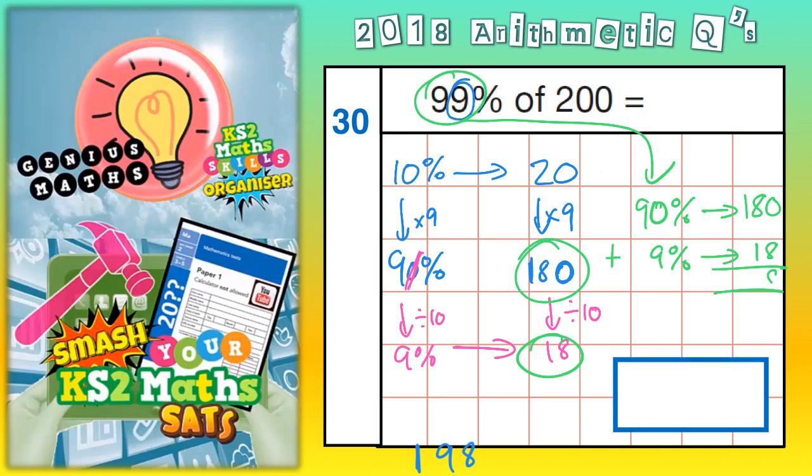0 plus 8 is 8, 8 plus 1 is 9, 1 plus nothing is 1. So again, 90% plus 9% is 99%, and we've just worked out that that is equal to 198, which is exactly the same as the answer we got down here when we did it the other way.